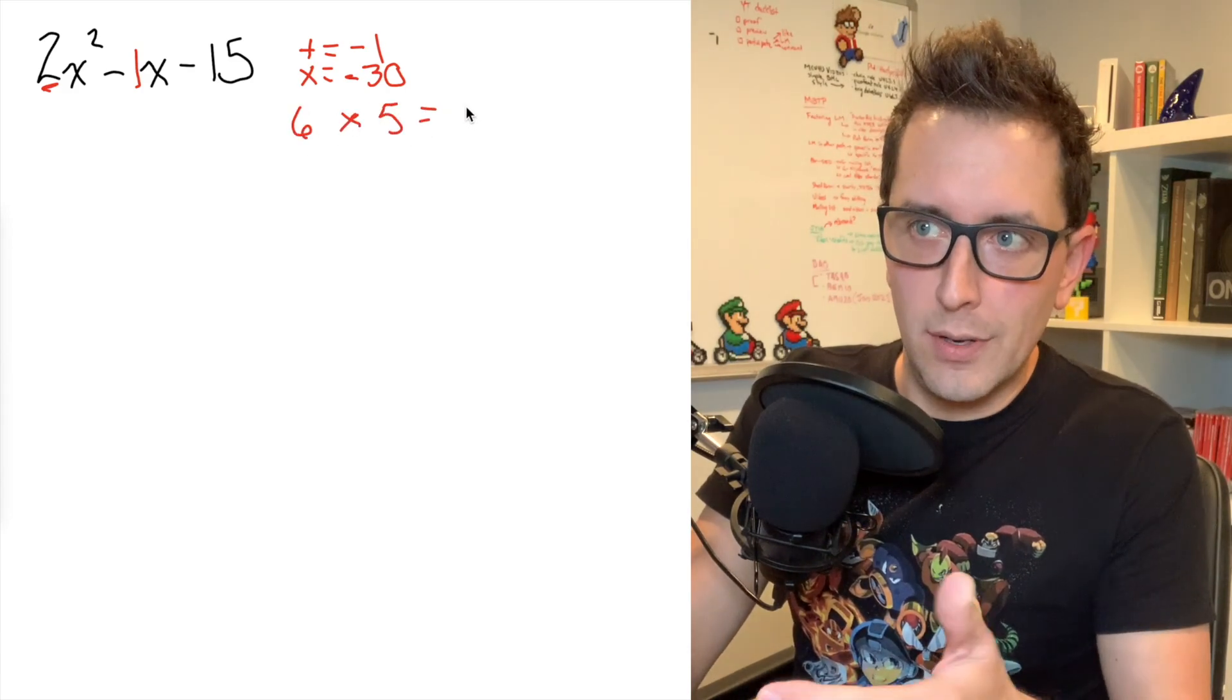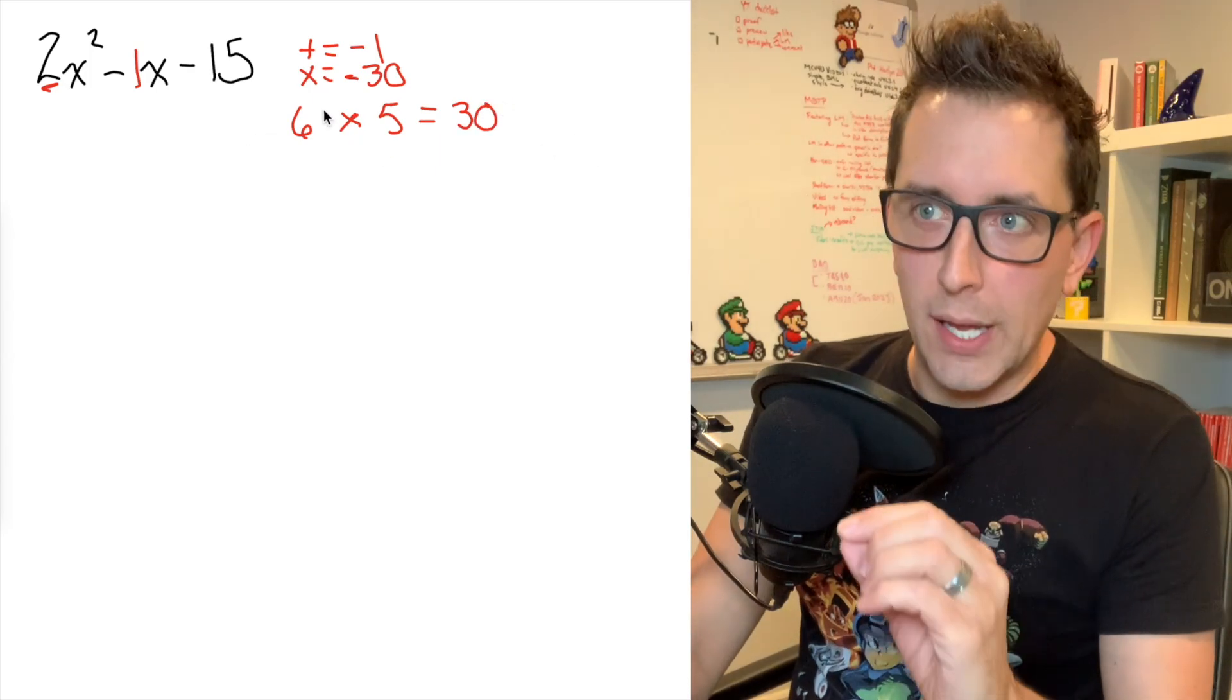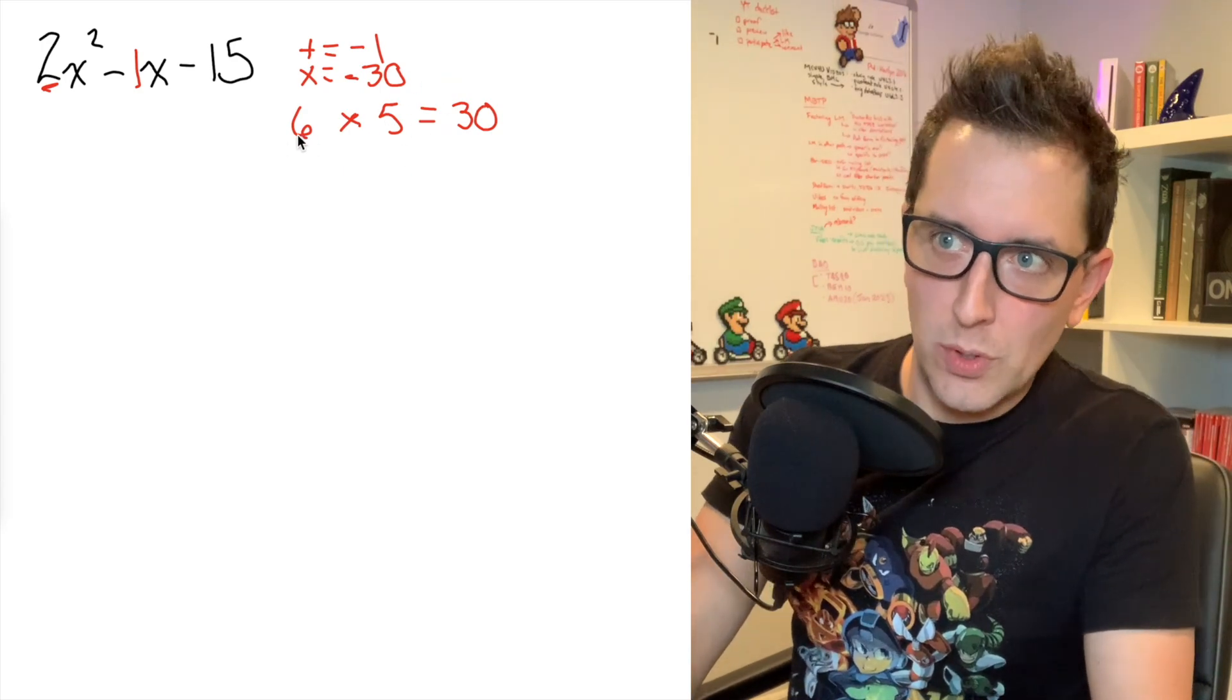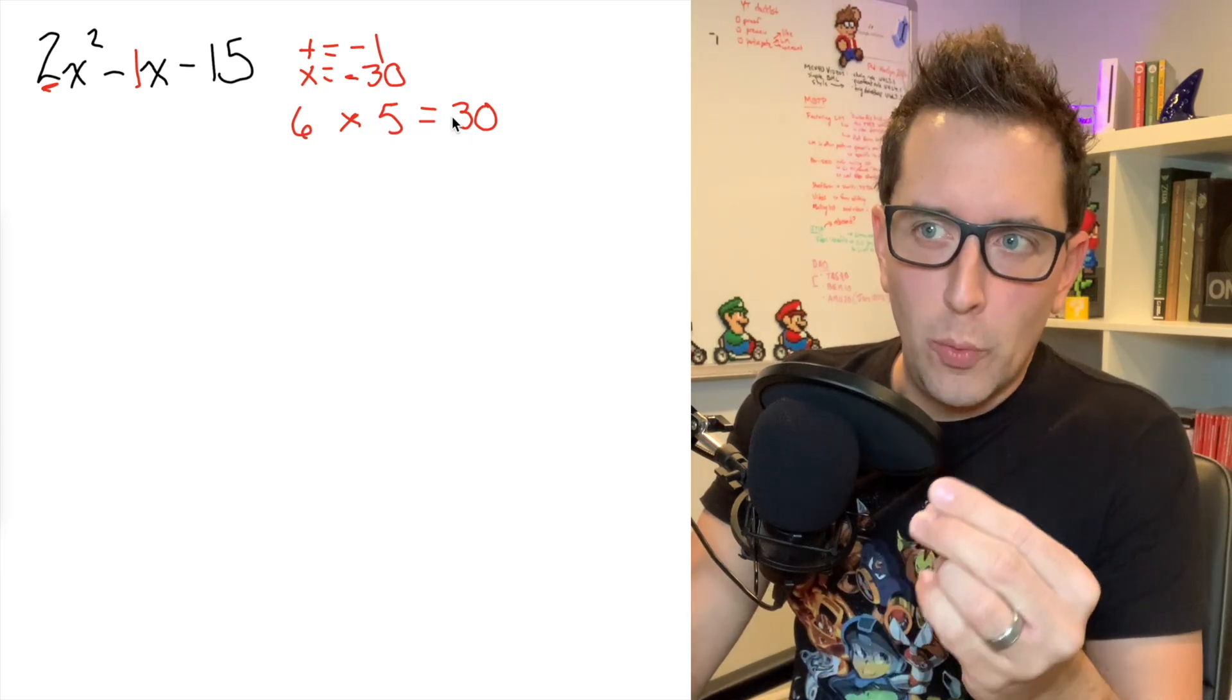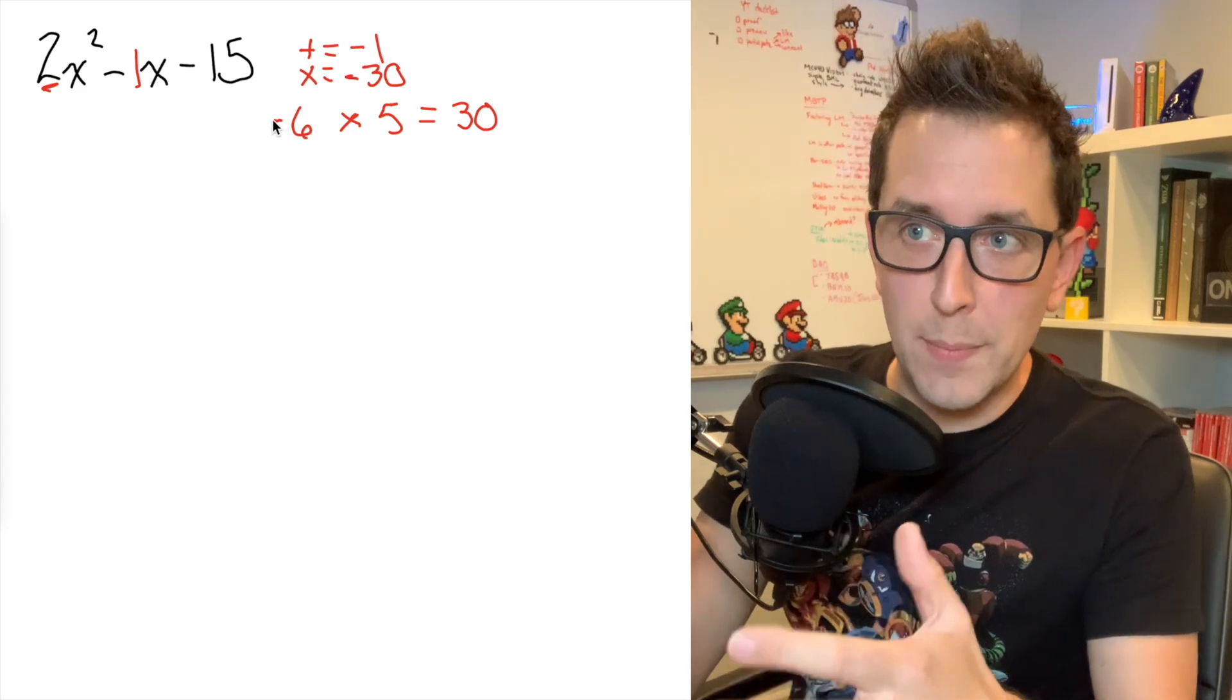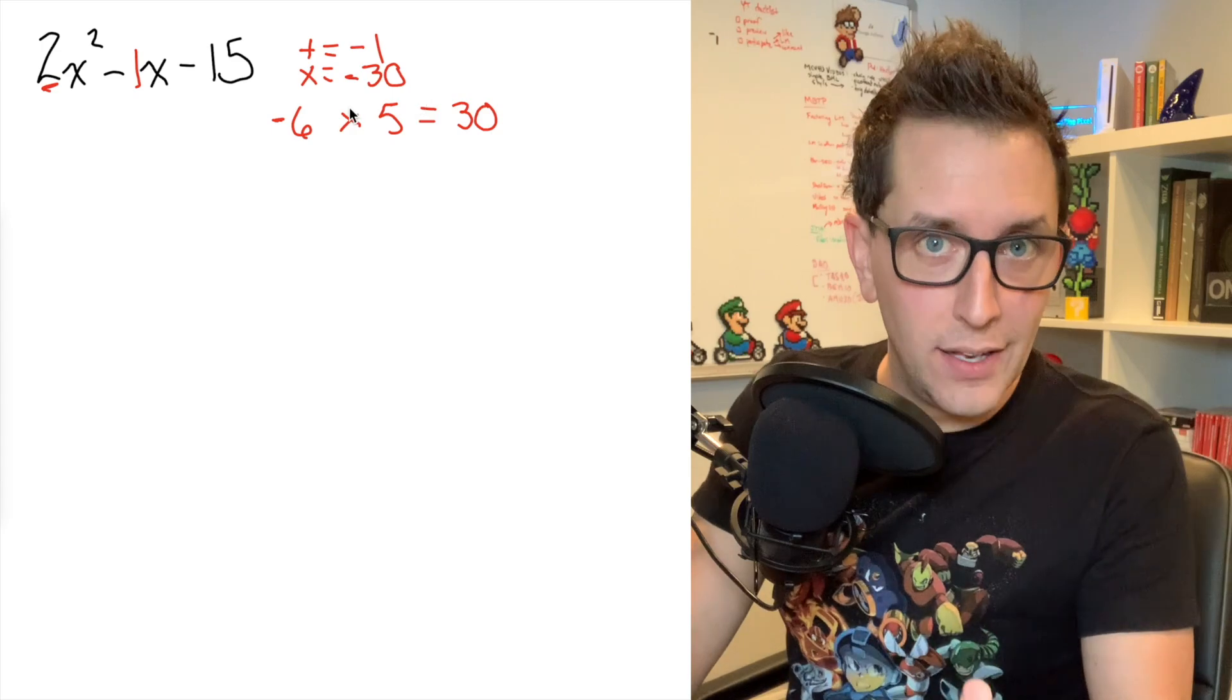If I multiply six times five, I know I'm going to get 30, but I want to get negative 30. So one of those numbers is going to have to be negative. And here's the thinking I use to decide which one. I just do a little bit of guessing and checking. If I make the five negative, I will get negative 30. But when I add six and negative five, I don't get negative one. I get positive one. So that tells me that I have to make my six negative so that when I add those two numbers together, I will get negative one.